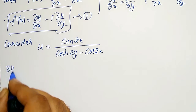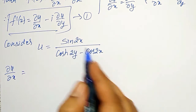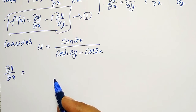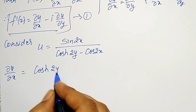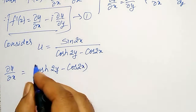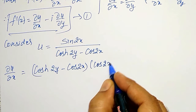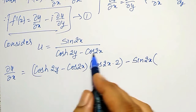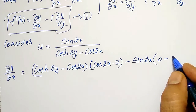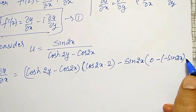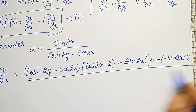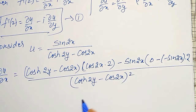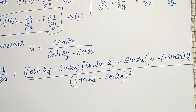Now I want to find ∂u/∂x. Therefore ∂u/∂x equals — I will differentiate partial with respect to x of both numerators containing x. We have to differentiate using the quotient rule. That is: (cosh 2y − cos 2x) · d(sin 2x) = (cosh 2y − cos 2x)·cos 2x·2, minus sin 2x times the partial derivative of (cosh 2y − cos 2x), all divided by the denominator squared. I will not simplify — I will keep as is because I want ∂u/∂x at x = 0 and y = 0.